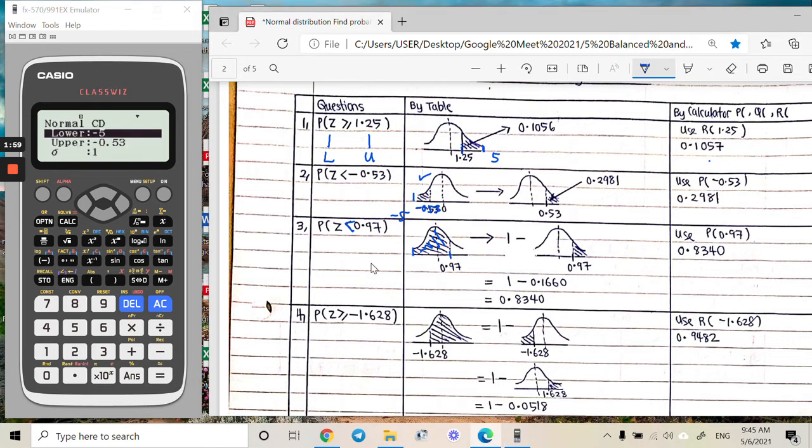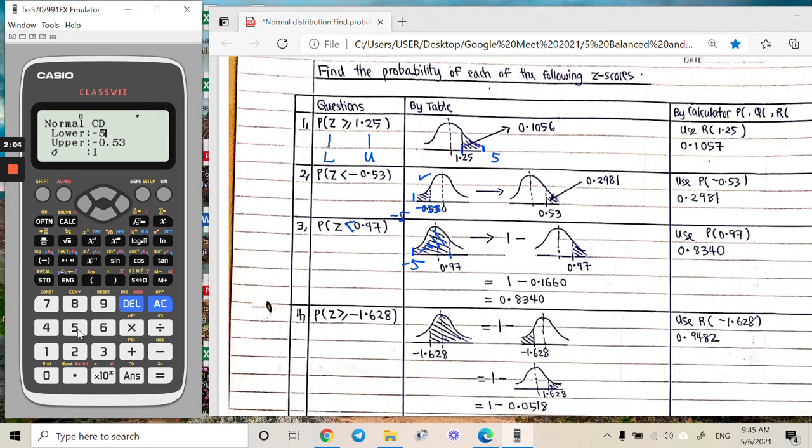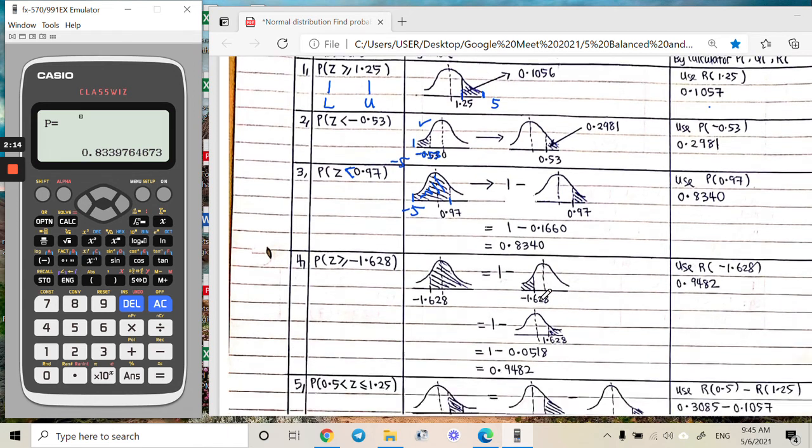So lower limit becomes negative 5, upper limit becomes 0.97. Put it equal, then we get the answer 0.83 something, similar like this.